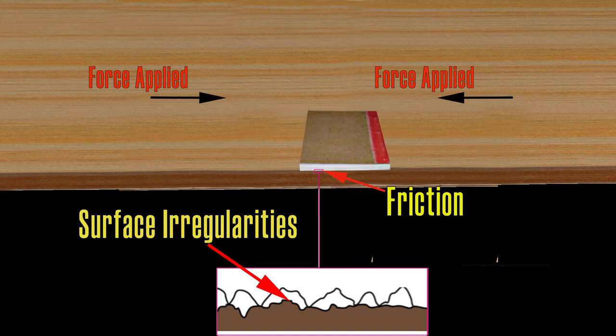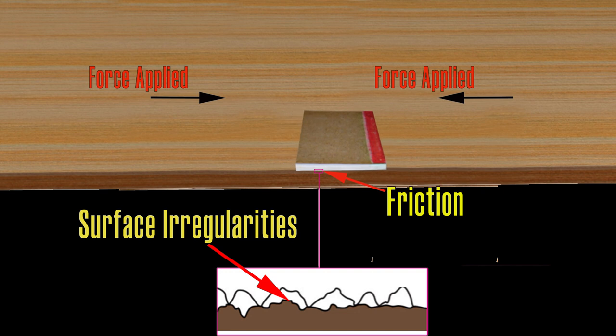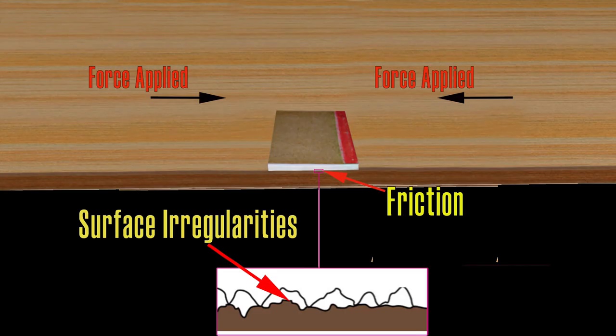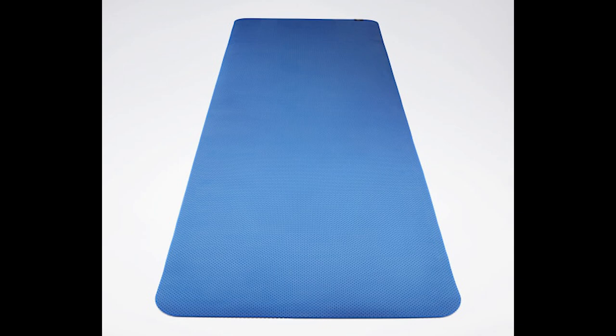When we attempt to move any surface, we have to apply a force to overcome interlocking. On rough surfaces there are a larger number of irregularities, so the force of friction is greater when a rough surface is involved. This explanation helps you find the answers to the activity. The force of friction will also increase if the two surfaces are pressed harder — you can experience this by dragging a mat when nobody is sitting on it versus when a person is sitting on it.